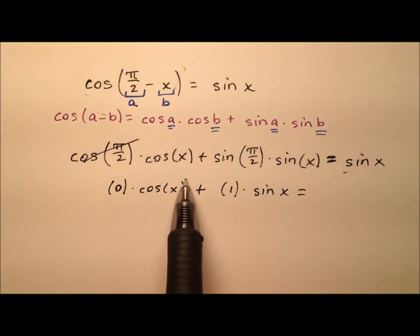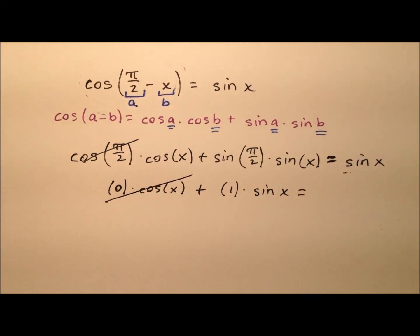This multiplication by 0 actually just makes that piece of that expression go away, and then 1 times sine x is just sine x. So here we see that the sine x equals the sine of x, so we know we're good to go.